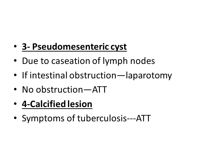Another presentation in the mesentery is pseudo-mesenteric cyst, which is due to caseation of the mesenteric lymph nodes. If intestinal obstruction is present, laparotomy will be needed; but if there is no obstruction, anti-tubercular therapy is given. Sometimes it presents as a calcified lesion — one of the mesenteric lymph nodes gets calcified — and after confirmation, anti-tubercular therapy is started.